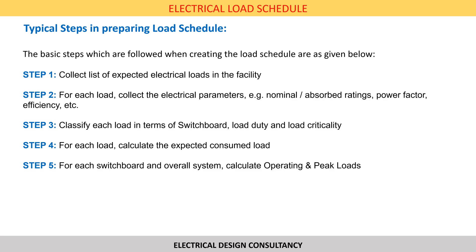First, we need to collect the list of expected loads in the facility. Then for each of these loads we need to collect the electrical parameters, namely the nominal and absorbed power, the power factor, and efficiency. After this, we need to classify each load in terms of switchboard, the load duty and the load criticality. As a next step, we need to calculate for each of these loads the expected consumed load.